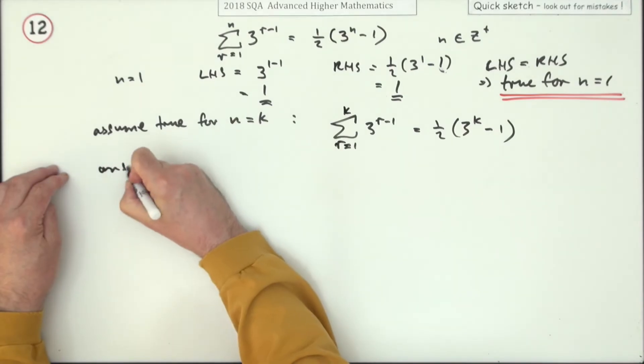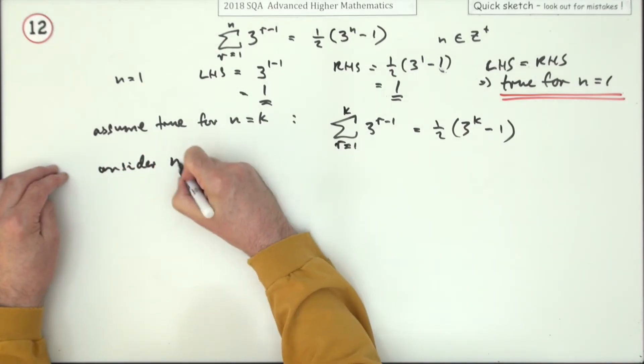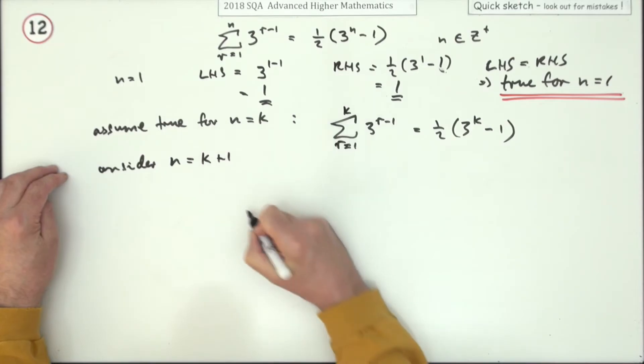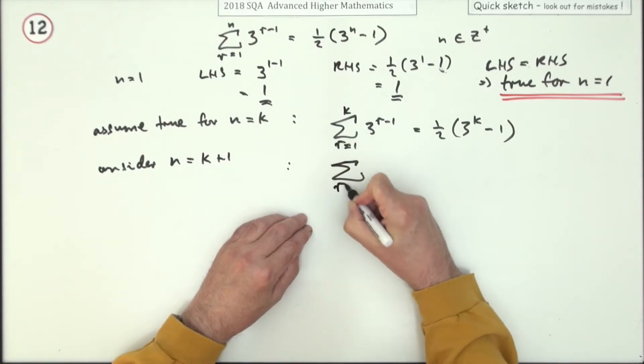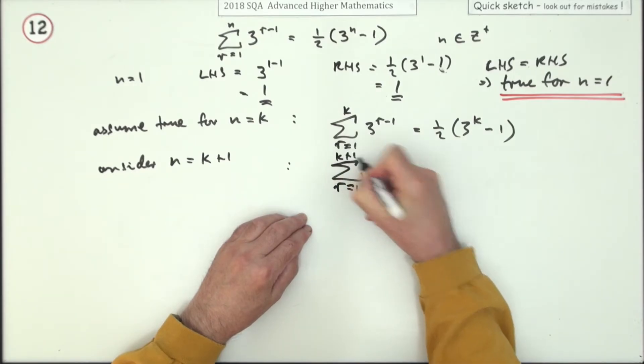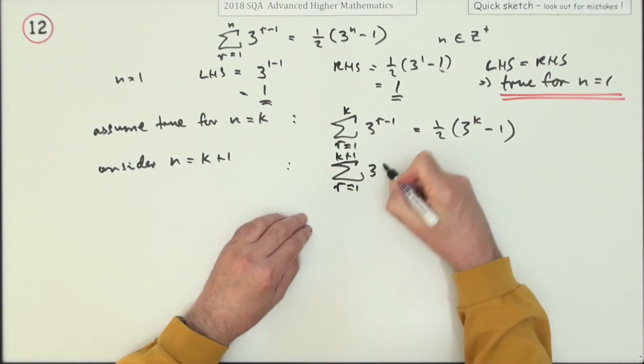Now you consider the next step. Consider n equals k plus 1. Right, well n equals k plus 1 means I've got the sum from r equals 1 to k plus 1 of 3^(r-1).